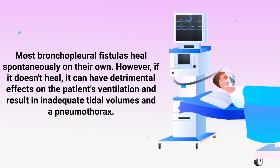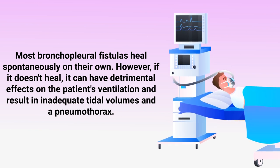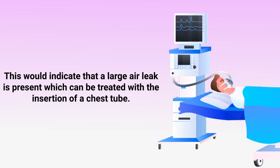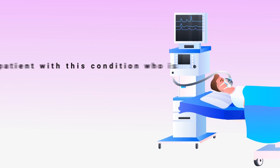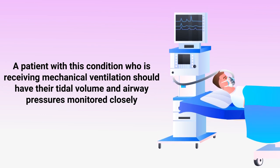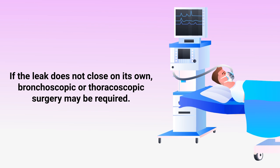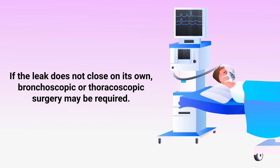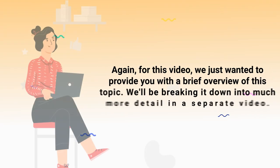Most bronchopleural fistulas heal spontaneously on their own. However, if it doesn't heal, it can have detrimental effects on the patient's ventilation, resulting in inadequate tidal volumes and a pneumothorax. This would indicate that a large air leak is present, which can be treated with the insertion of a chest tube. A patient receiving mechanical ventilation should have their tidal volume and airway pressures monitored closely. If the leak does not close on its own, bronchoscopic or thoracoscopic surgery may be required.